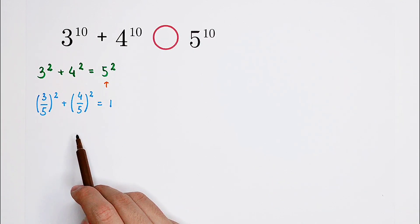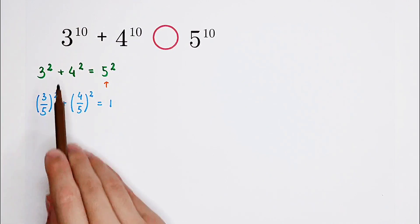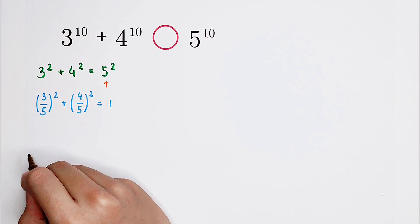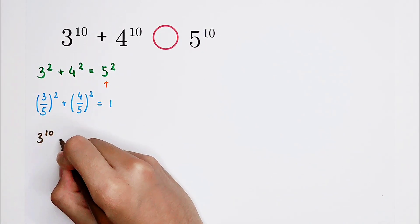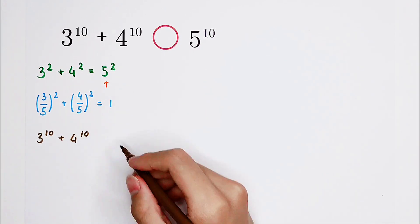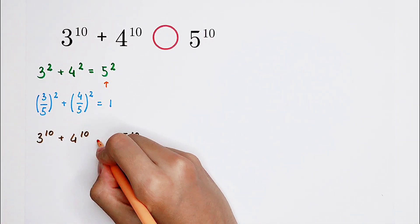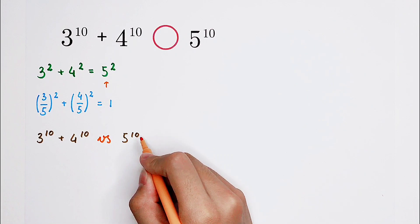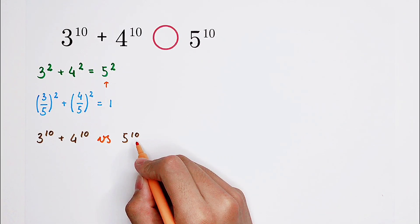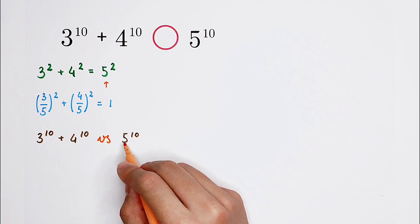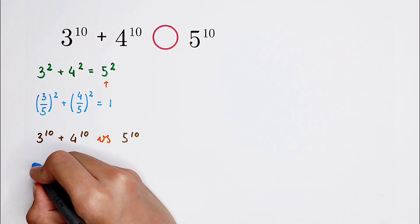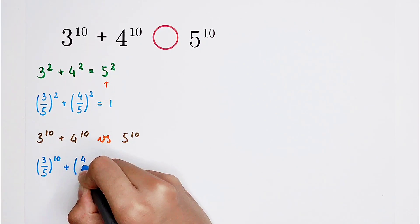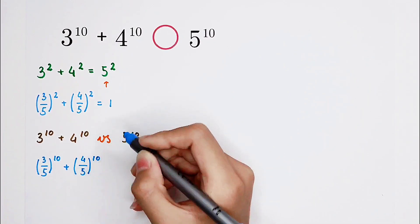Now we are going to compare 3 to the power of 10 plus 4 to the power of 10 with 5 to the power of 10. We can use the same method: divide both sides by 5 to the power of 10. Since it is positive and non-zero, we can do this. So we get (3/5) to the power of 10 plus (4/5) to the power of 10 on the left, and 1 on the right-hand side.